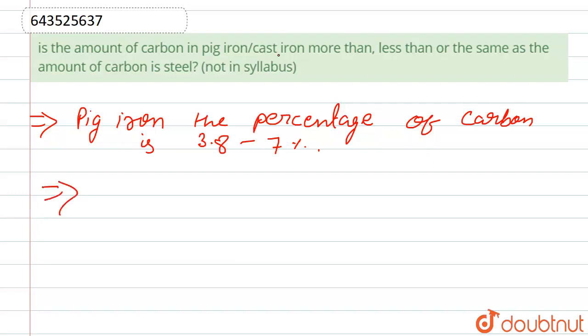Whereas steel has a relatively low percentage of carbon, which is 0.05 to 0.30 percent.